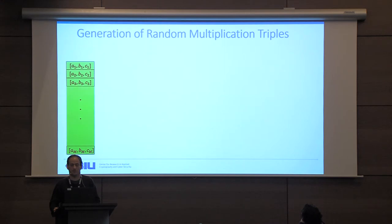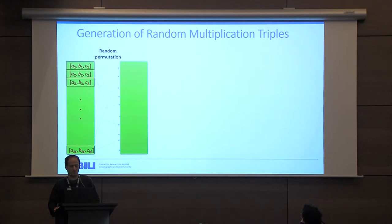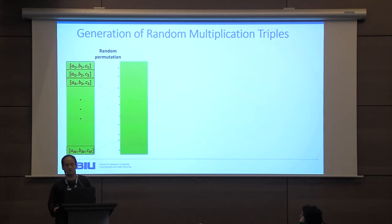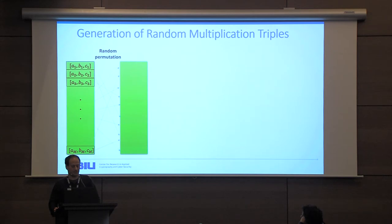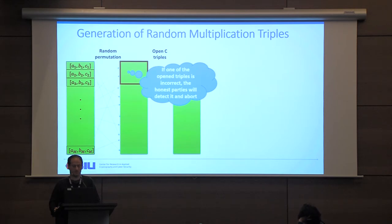We use the cut-and-choose method. We start by generating a large number of random multiplication triples using the semi-honest protocol — since it is cheap to generate them, we can generate a large amount. After that, we randomly permute these triples. The key point is that the parties cannot know the actual permutation before they have generated the initial list of triples. After permuting, we open — or sacrifice — c triples from the list, meaning the actual values of these triples are revealed to the parties.